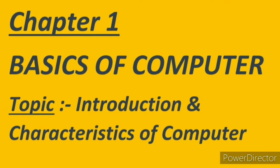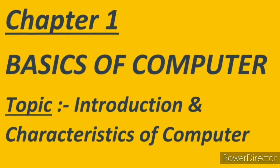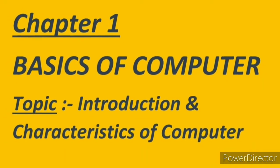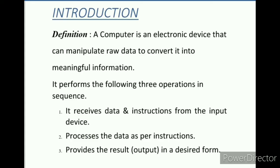So now let's move on to the introduction. Definition: a computer is an electronic device that can manipulate raw data to convert it into meaningful information. That means it takes input, manipulates — that is, processes — the data, and converts it into meaningful information.